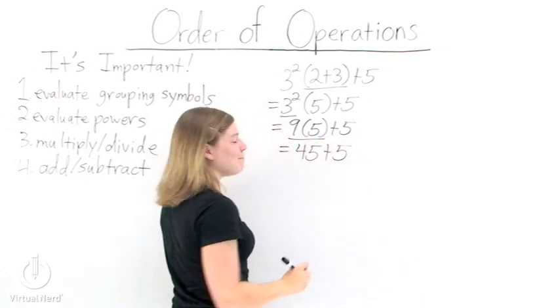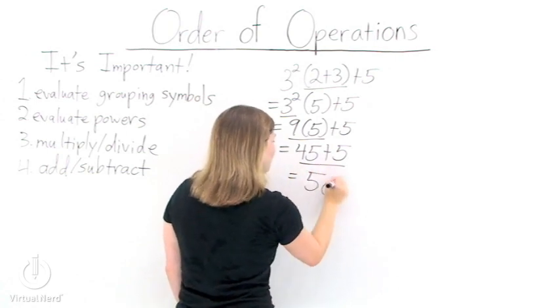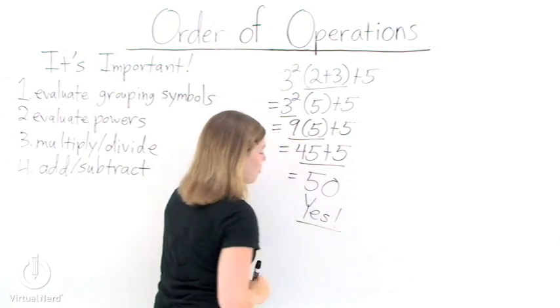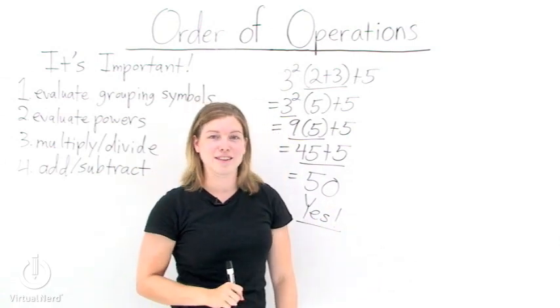Last step, add and subtract from left to right. 50. The right answer. We used the order of operations correctly and got the right answer. Perfect.